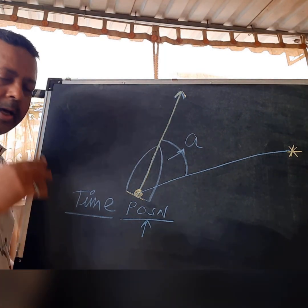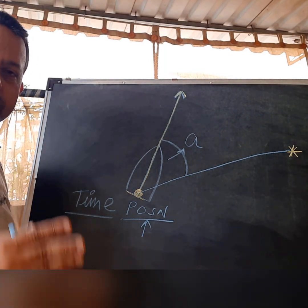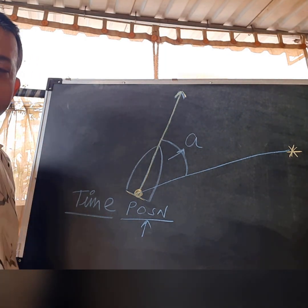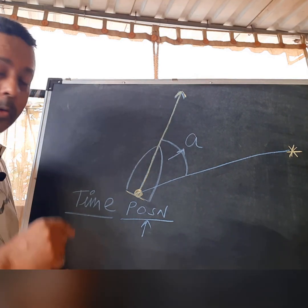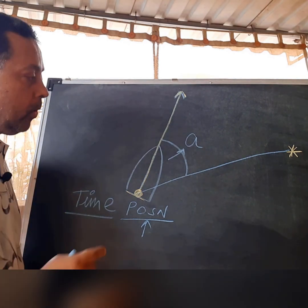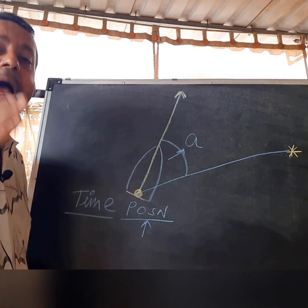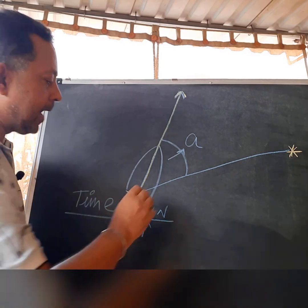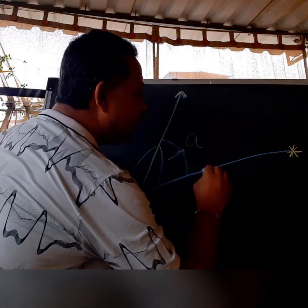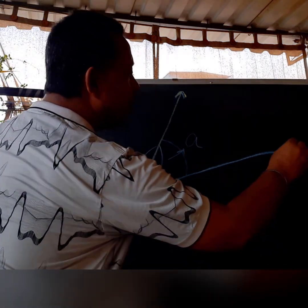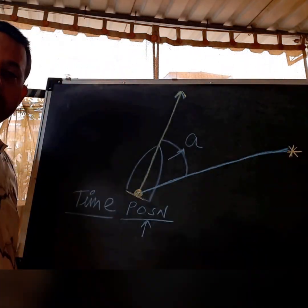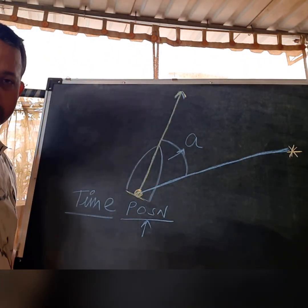There are some websites, which I will show you later and will put the link below, where you can go and find the sun's azimuth — the exact azimuth of the sun with reference to the true north.